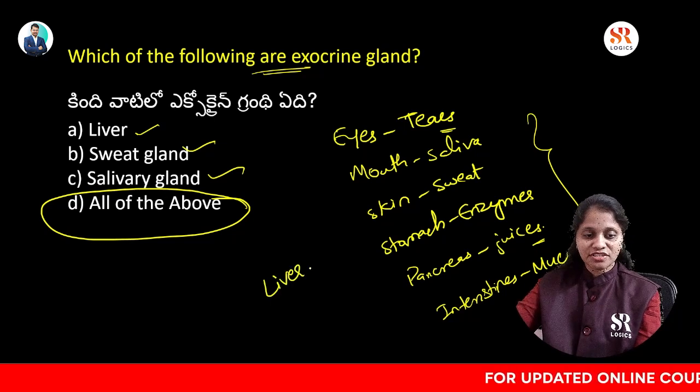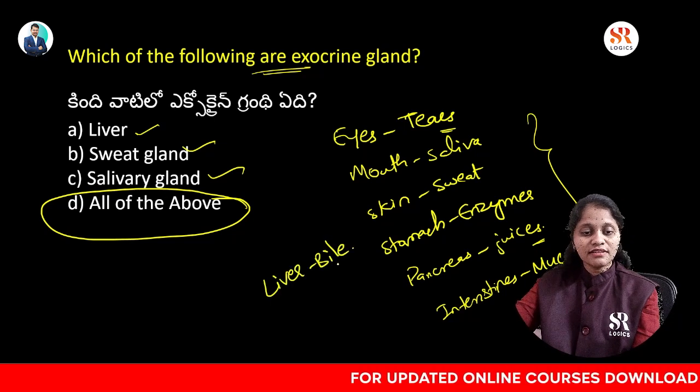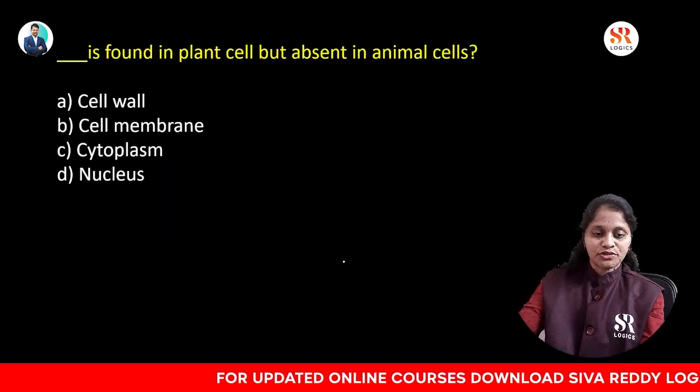It is also worth noting that the liver secretes bile juices, making it an exocrine gland as well.